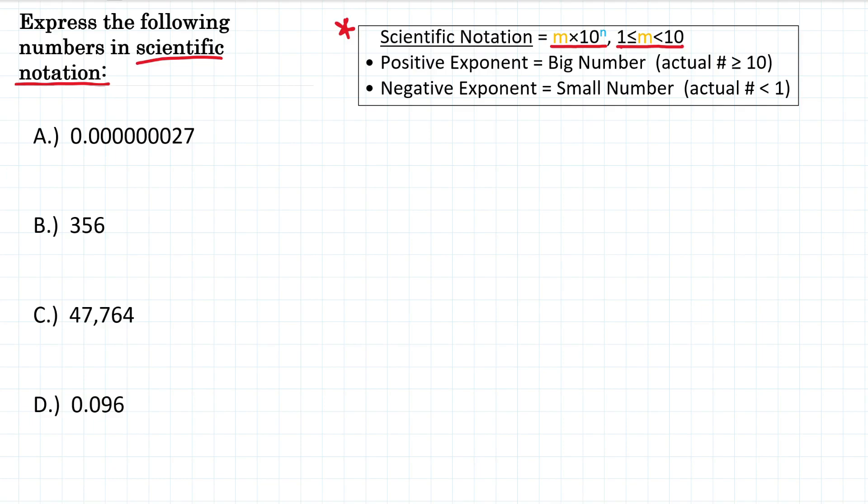So that's the format for scientific notation. And regarding the exponent, if we have a positive exponent, that is because we are dealing with a big number, or our actual number is greater than or equal to 10. If our exponent is negative, that means we have a small number, where our actual number is less than 1. So something like 0.0015 would be a small number.